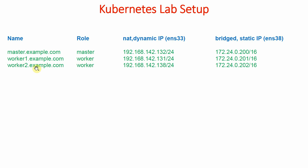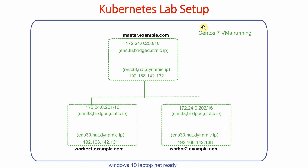The second system is worker1.example.com with the role of worker, and the third system is worker2.example.com, also a worker. Their addresses are 192.168.142.131 for worker one and 192.168.142.138 for worker two as dynamic addresses. The static addresses assigned are 172.24.0.201 for worker one and 172.24.0.202 for worker two. In the lab, all three VMs are running in VMware. The master node's bridge card (ens38) was given the static IP, while ens33 (NAT) obtained 192.168.142.132 dynamically.